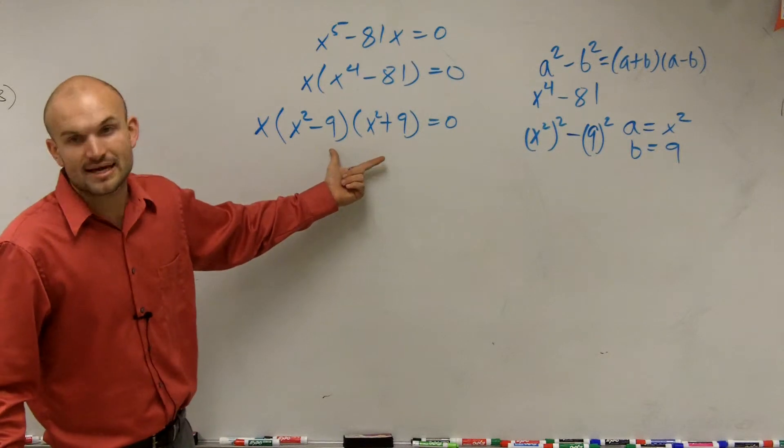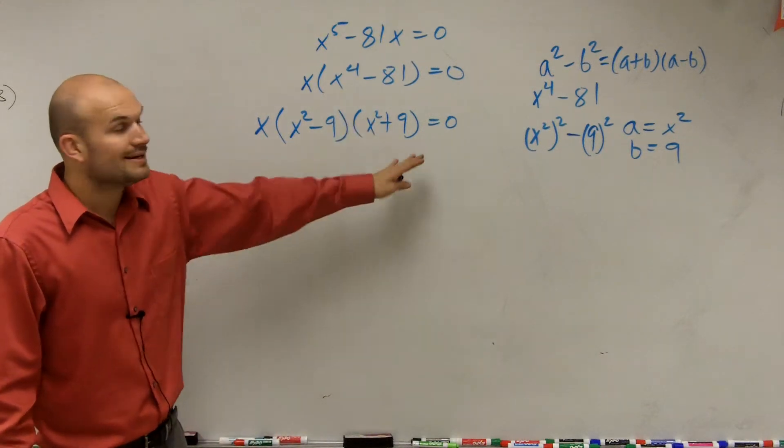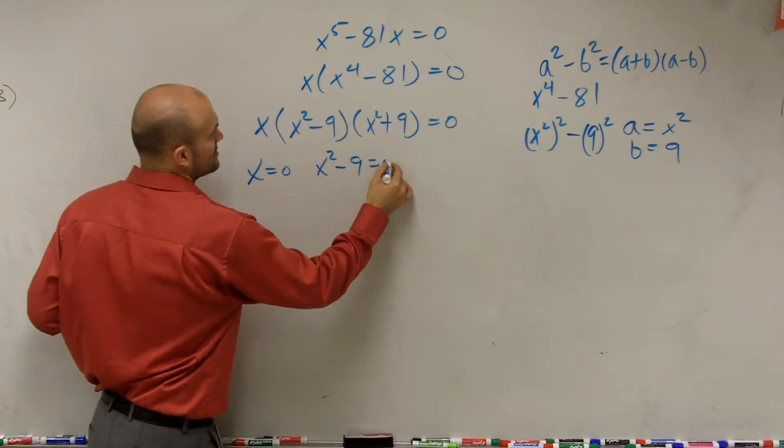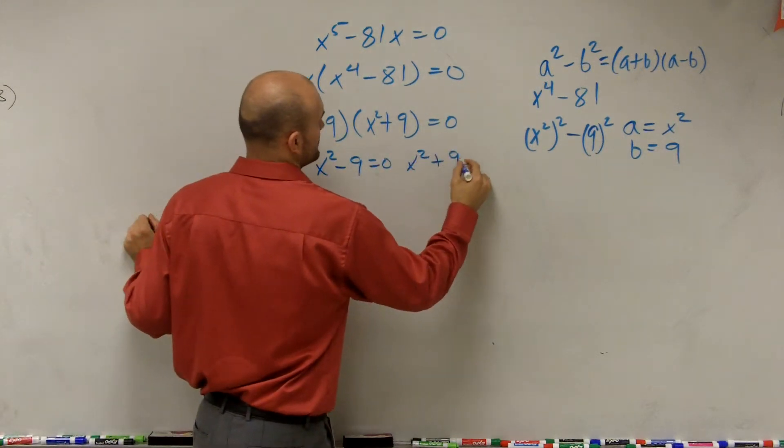So I factored this to x times x squared minus 9 times x squared plus 9. Now I apply the zero product property: x equals 0, x squared minus 9 equals 0, and x squared plus 9 equals 0.